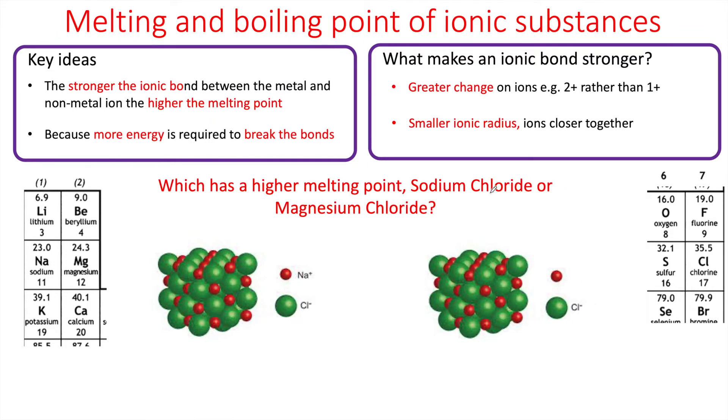Let's have a look at another example. Which has a higher melting point, sodium chloride or magnesium chloride? We've got sodium chloride there. If we imagine that the red this time is magnesium, of course magnesium has a 2+ charge because it's in group 2. You'll notice there's not much difference in ionic radius.